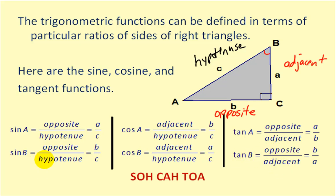Looking at angle B, opposite over hypotenuse would be B over C for sine B. Cosine B would be adjacent over hypotenuse, or A over C. And tangent of B would be opposite over adjacent, or B over A.